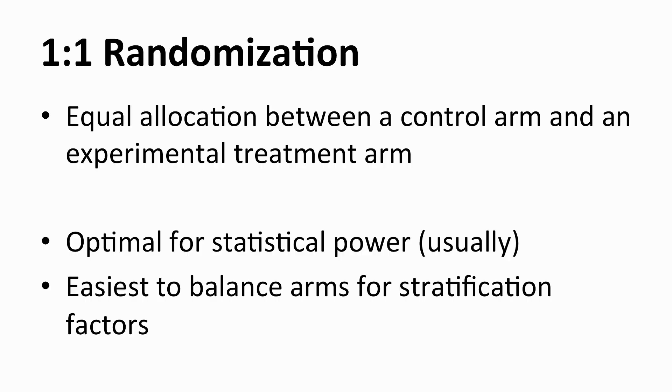Hi, I'm Mark Fitzgerald, and I'm going to talk to you today about alternate randomization ratios. So what are we talking about? Our standard trial is going to use a one-to-one randomization. For every patient that we put on the control arm, we put one patient on the experimental treatment arm and just balance things out.